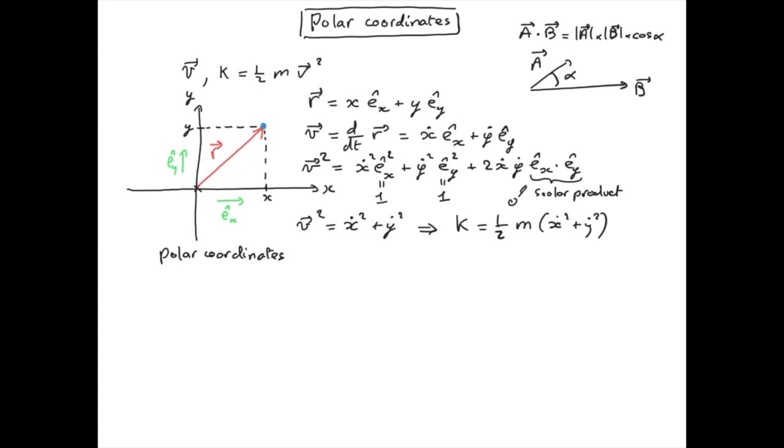So in polar coordinates, the position vector r is simply expressed as the magnitude of the vector r times the unit vector e_r. This unit vector is naturally parallel to the vector r. And we can also define the vector e_theta, which is perpendicular to this unit vector e_r. Theta being the angle between the vector r and some axis, for instance, x.